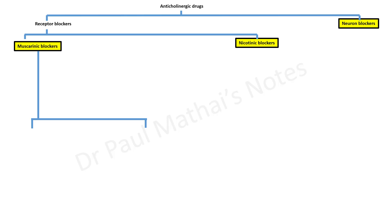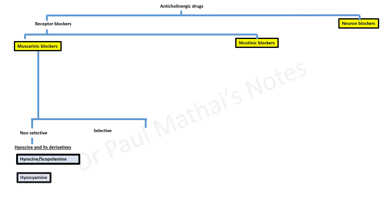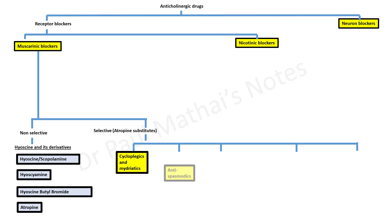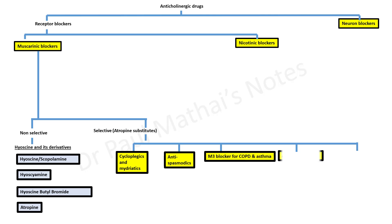Muscarinic blockers can be broadly classified into non-selective and selective drugs. The non-selective drugs include hyosine and its derivatives — hyosine (also called scopolamine), hyosine butyl bromide, and most importantly, atropine. The selective muscarinic blockers are sometimes called atropine substitutes and include cycloplegics and mydriatics, antispasmodics, M3 blockers for COPD and asthma, anti-Parkinsonian drugs, and pre-anesthetic medication.